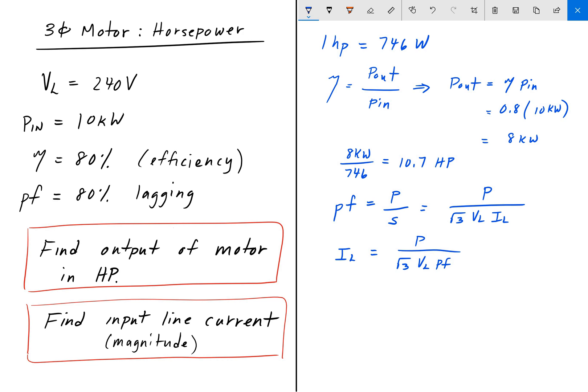And so I line is your input current, V L is your input voltage. And so therefore, P has to be your input power. And then we can plug those in. Input power is given as 10 kilowatts divided by the square root of 3. V line is 240. Power factor is 0.8. And when we plug all that in, we get about 30.1 amps.